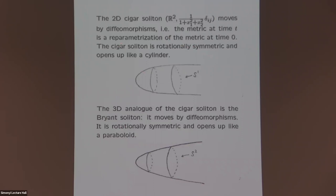There is a 3D analog found by Robert Bryant many years ago. Like the cigar soliton, it moves by diffeomorphisms under Ricci flow—self-similarly—and is positively curved and rotationally symmetric. A crucial difference is its asymptotic behavior: the radius grows like the square root of the distance, so it opens up like a paraboloid. This contrasts with the cigar's cylindrical asymptotics, reflecting the fact that S^2 has positive curvature while S^1 does not.